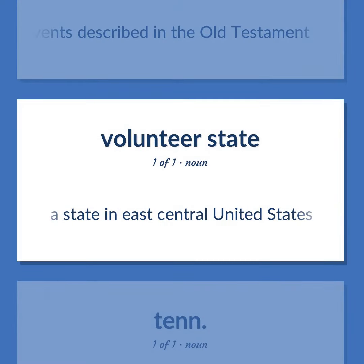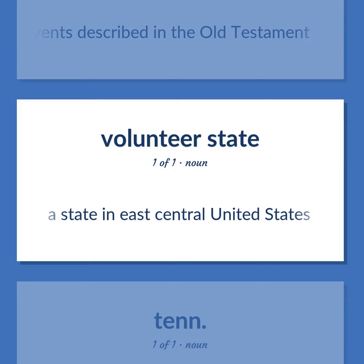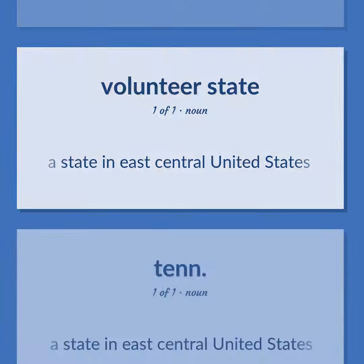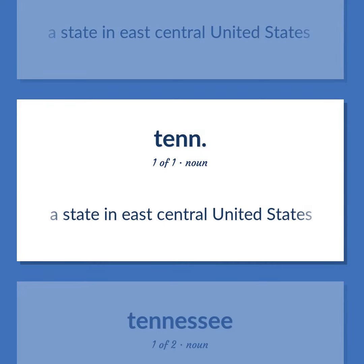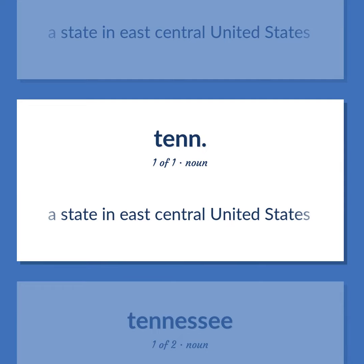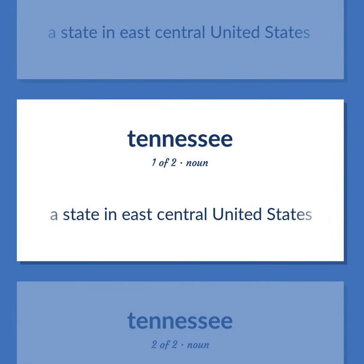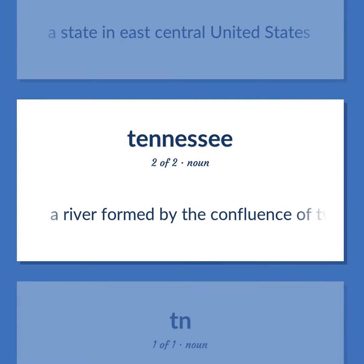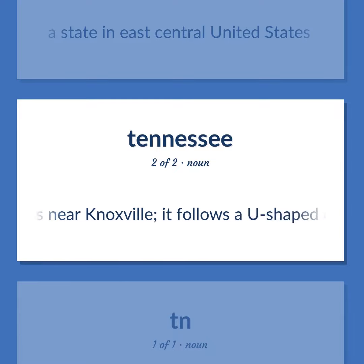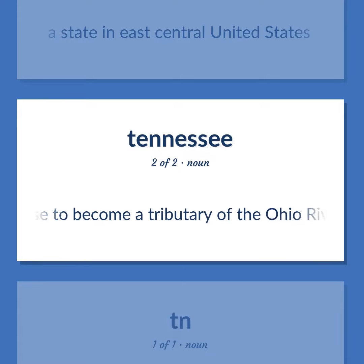A state in east-central United States. A river formed by the confluence of two other rivers near Knoxville; it follows a U-shaped course to become a tributary of the Ohio River in western Kentucky.